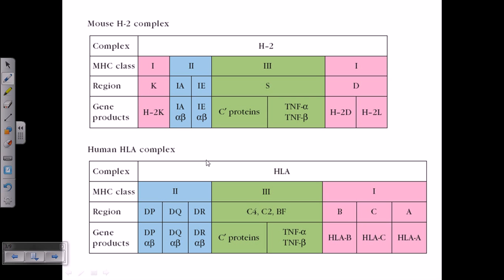In humans, for MHC Class 1 there are three different loci on the chromosome: locus A, B, and C. Each of these different positions has two different alleles which can recombine and rearrange. Using permutation and combination across three loci with two alleles each, we can get six unique types of MHC Class 1 molecules placed on the surface of cells.